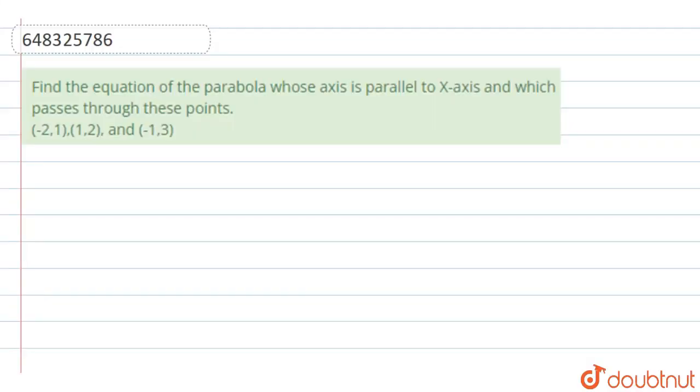Hello students, so here our question is find the equation of parabola whose axis is parallel to x axis and which passes through this point that is minus 2 comma 1, 1 comma 2 and minus 1 comma 3. So let us solve this.